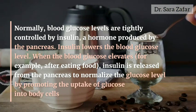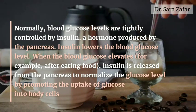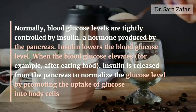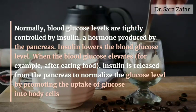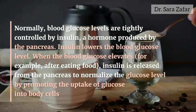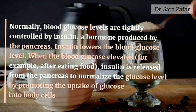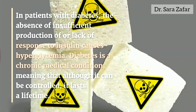Normally, blood glucose levels are tightly controlled by insulin, a hormone produced by the pancreas. Insulin lowers the blood glucose level. When blood glucose elevates, for example after eating food, insulin is released from the pancreas to normalize the glucose level by promoting the uptake of glucose into the body's cells. In patients with diabetes, the absence or insufficient production of, or lack of response to, insulin causes hyperglycemia.